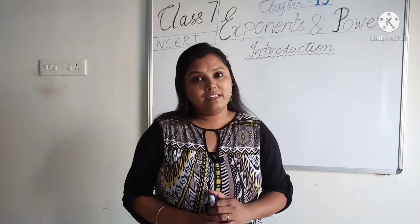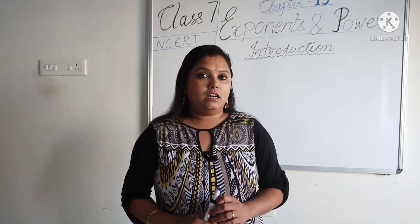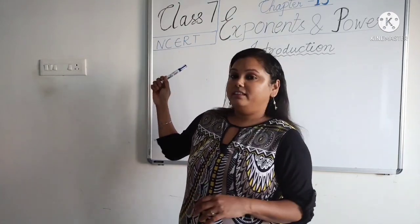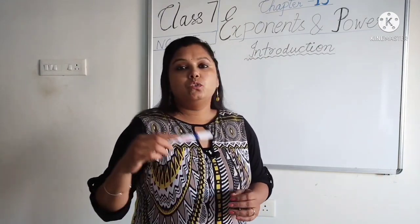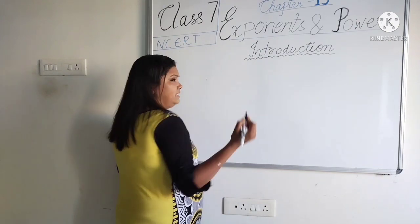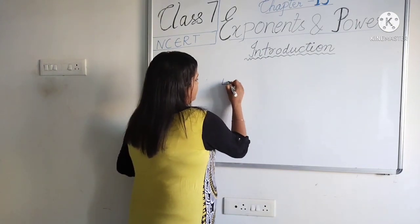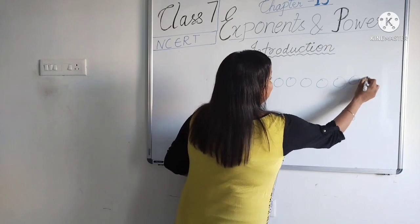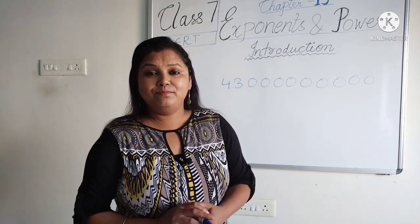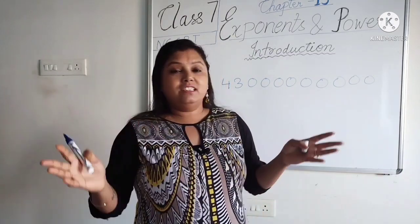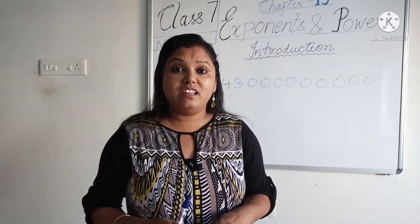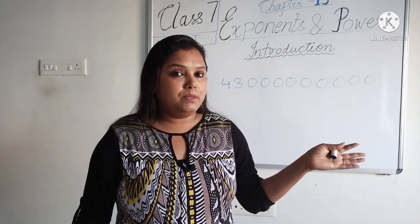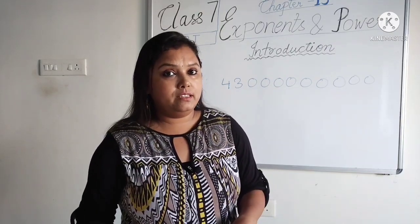Hello everyone, welcome to Funlearn with Tipti. Today we are going to start Chapter 13: Exponents and Powers, for Class 7. This is going to be an introductory video. Let's suppose I take a number like 30,000,000,000 — can you read this number? It is very difficult to read. Very large numbers are not only difficult to read and write, but also to compare. So what we do is write such large numbers in a shorter form using exponents.